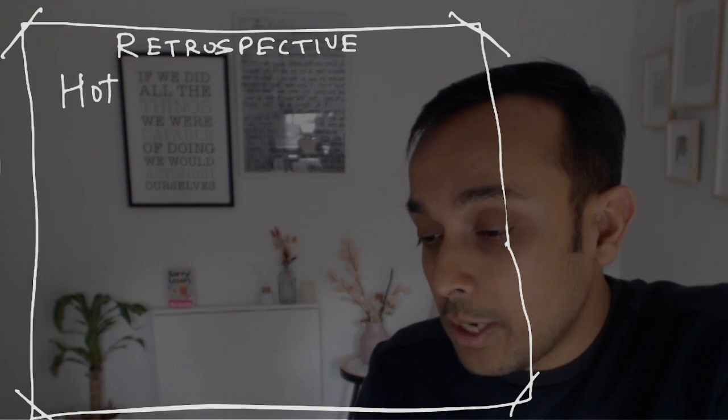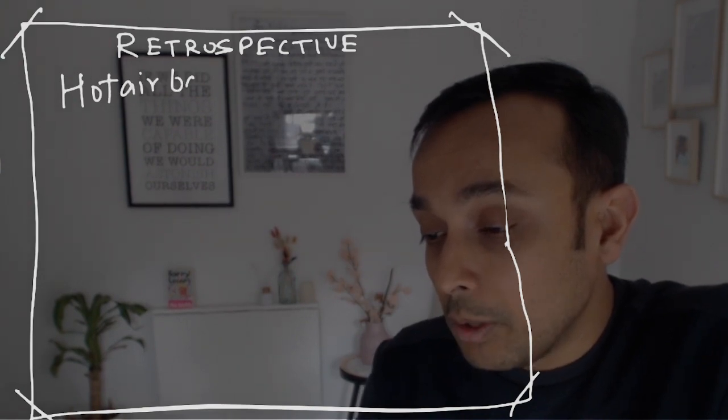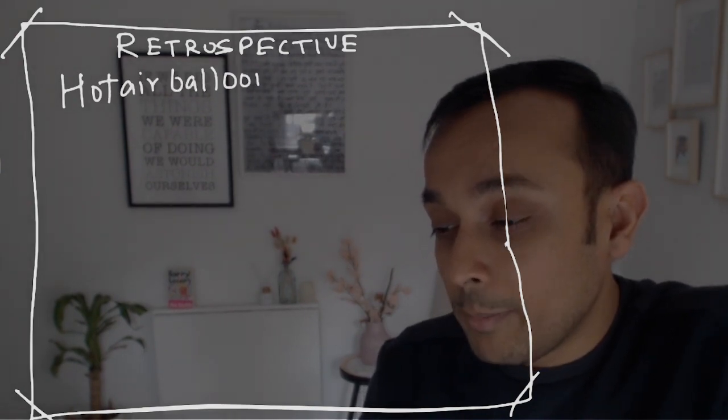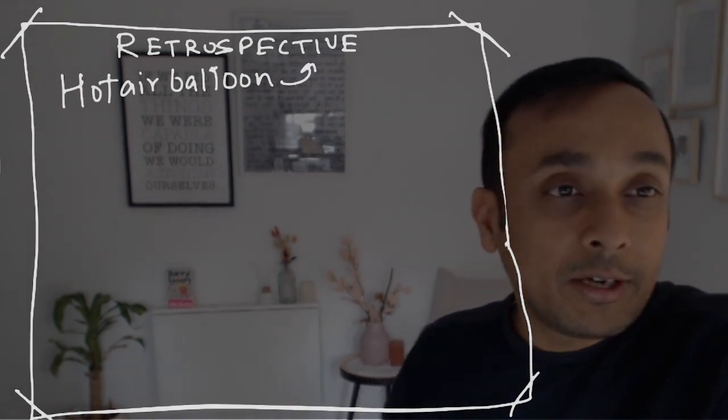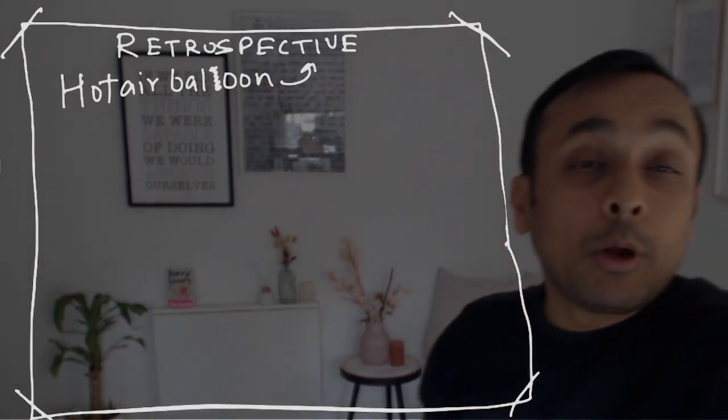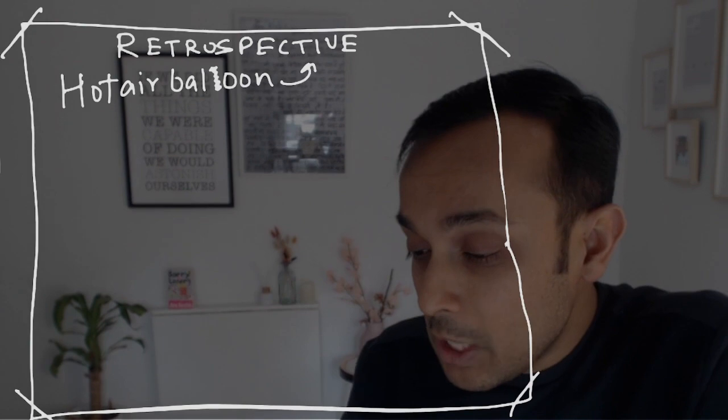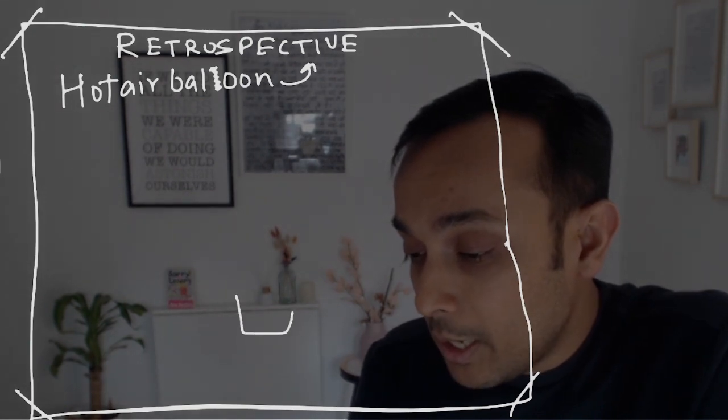Let's see how a graphic facilitator will make this. We'll be doing it in the form of a hot air balloon. Don't mind my spelling, I think there is one L right here. So, hot air balloon retrospective.